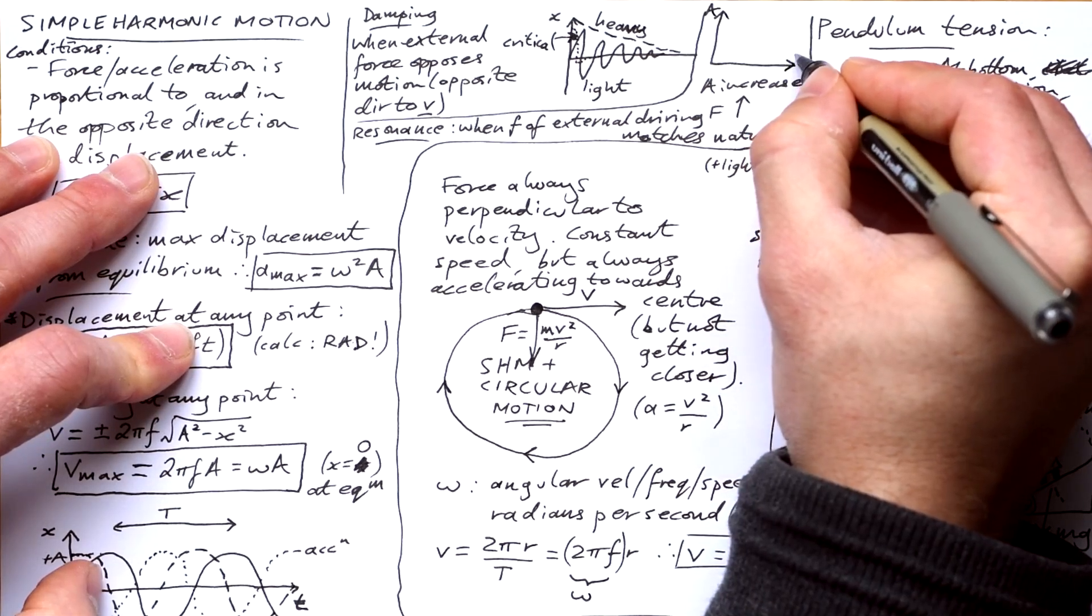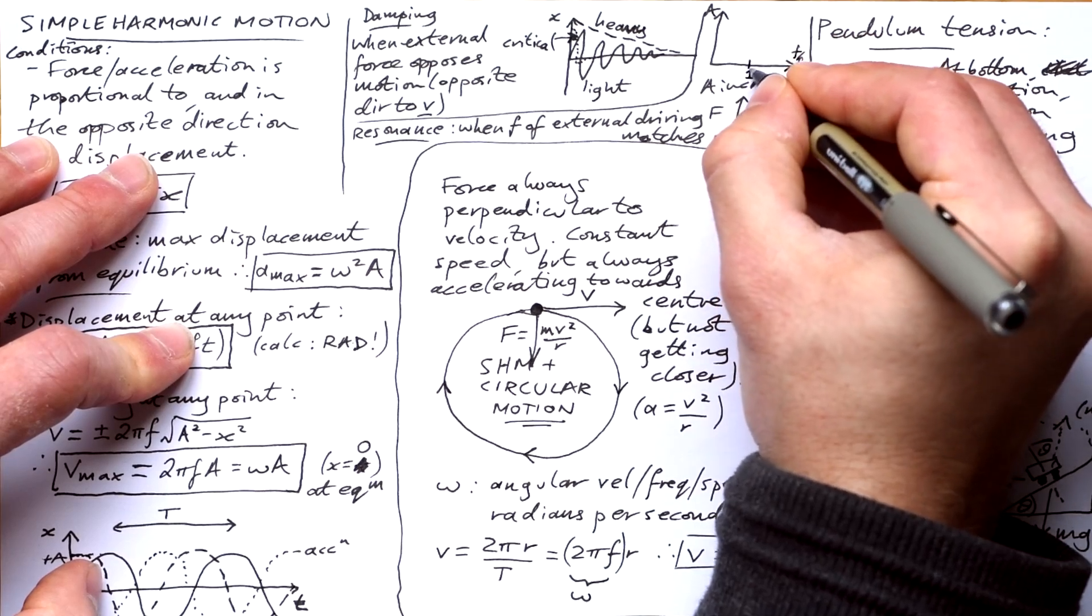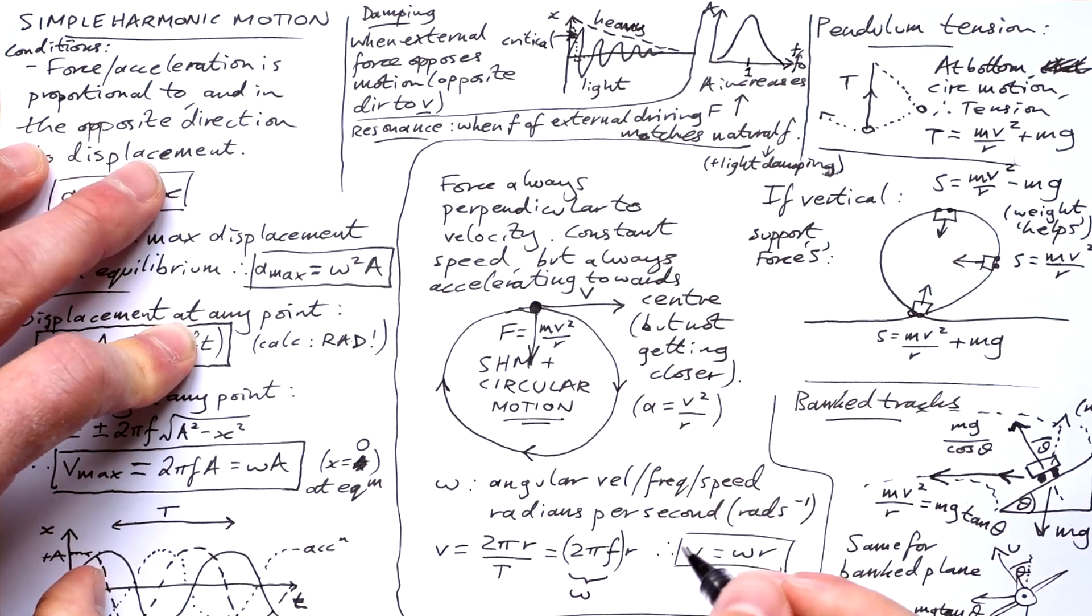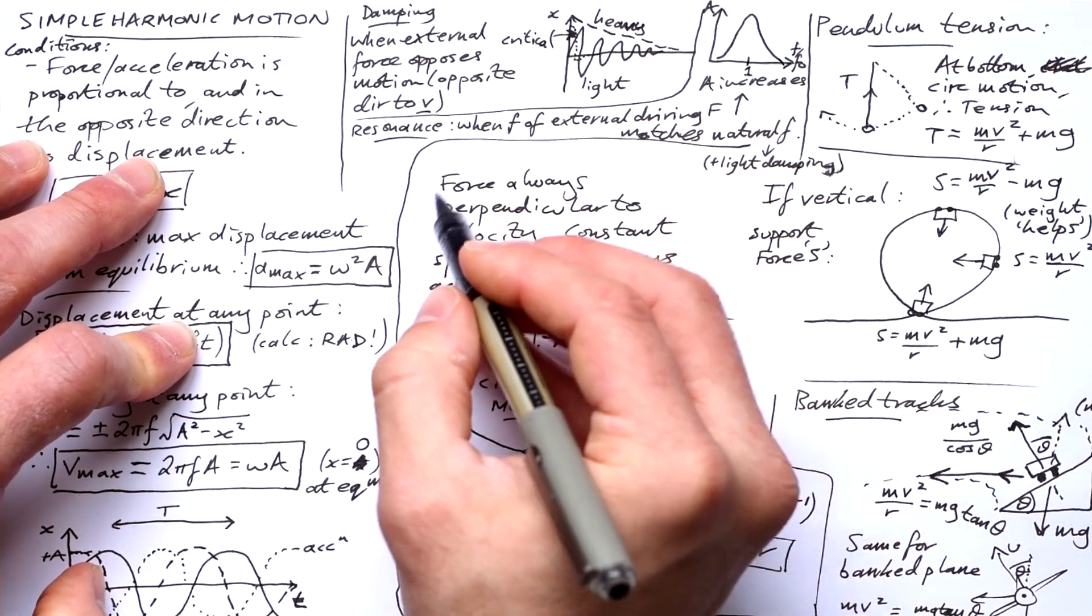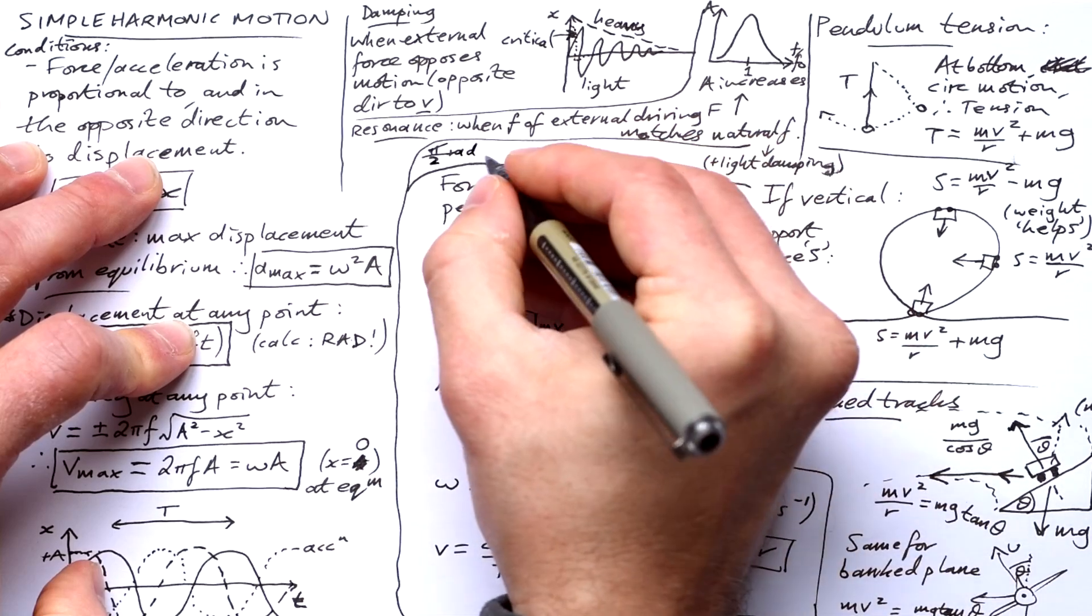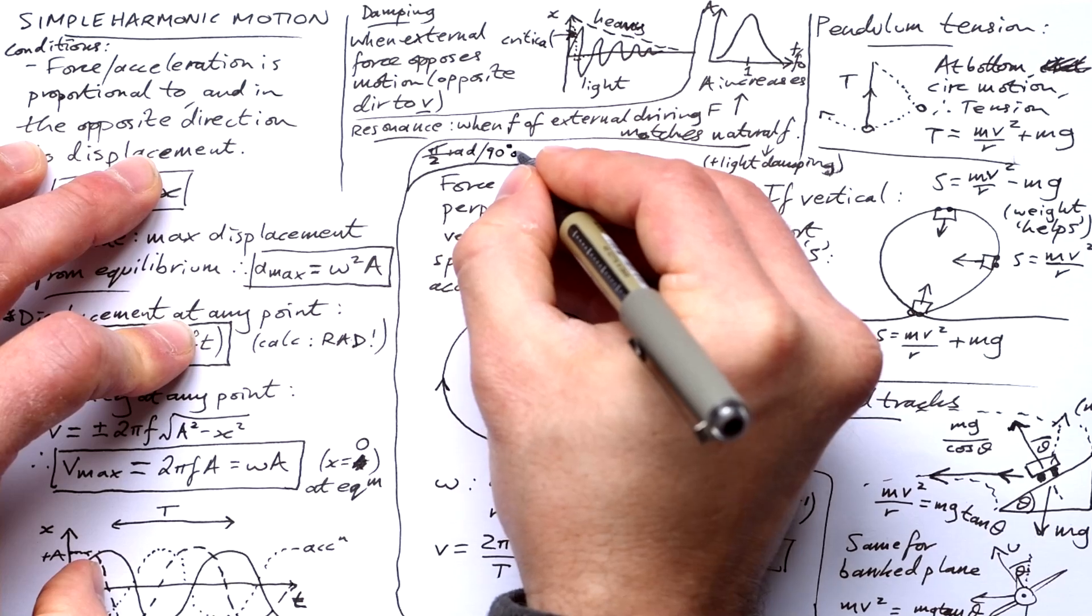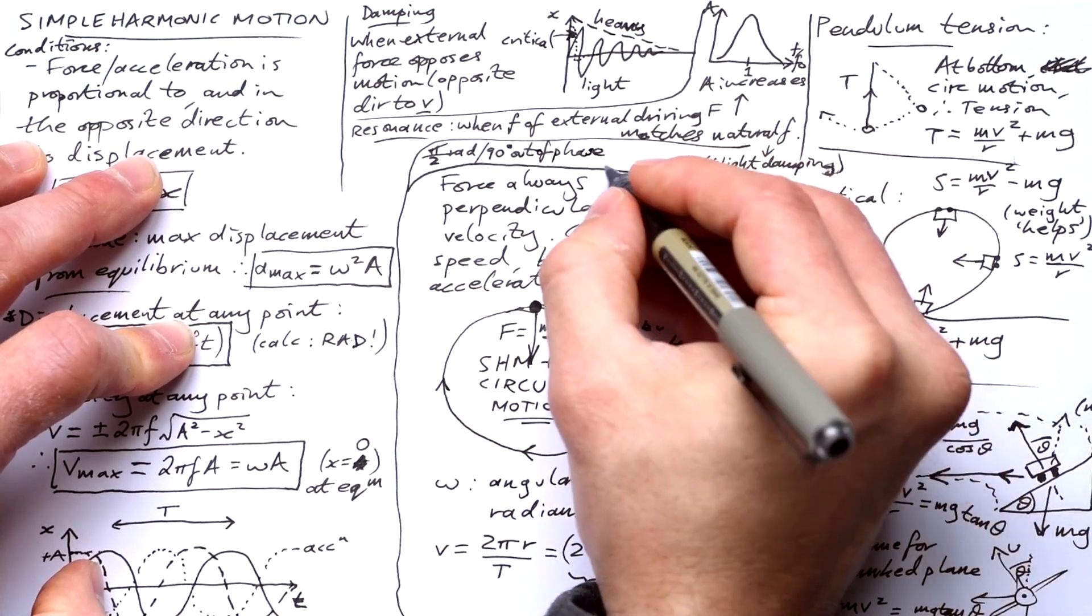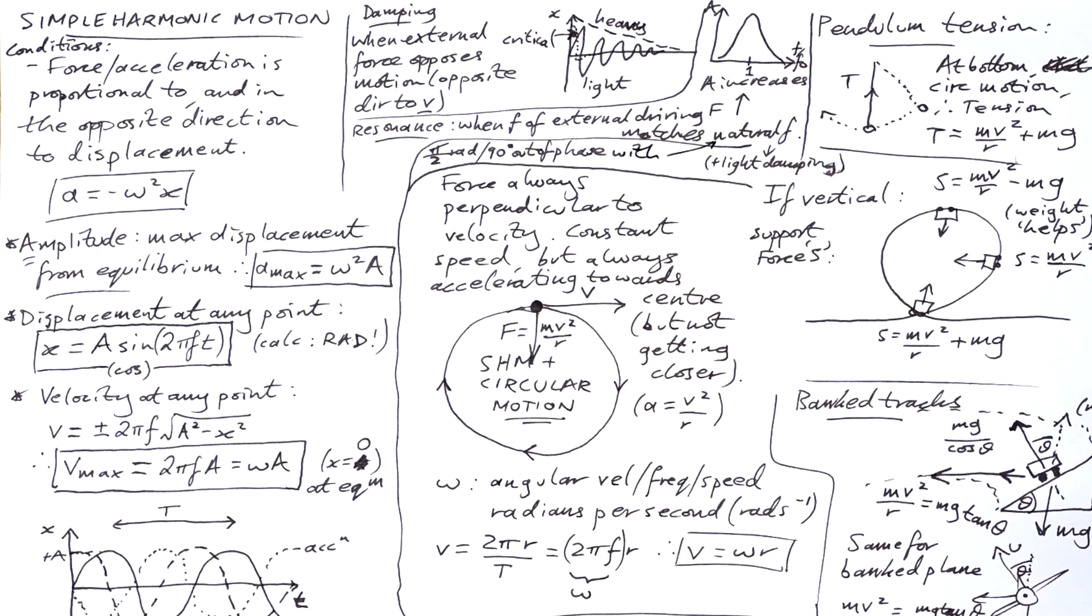Okay. So you might see a graph then that has amplitude on the y-axis and then F over F zero, the ratio of the driving force frequency to the resonant or natural frequency. And what you should see is it getting a lot bigger when this gets to one, in other words, when they are the same. If you do damp a system that is resonating, it makes the peak lower. Another thing you need to know is that the driving force is 90 degrees or half pi radians out of phase with the restoring force. With the example of me in the swing, I would push when they're at the bottom, when they're at equilibrium. The restoring force is zero at that point, but I am pushing at that point.